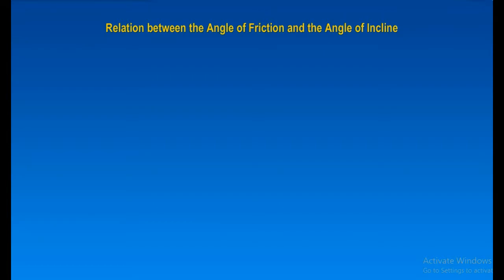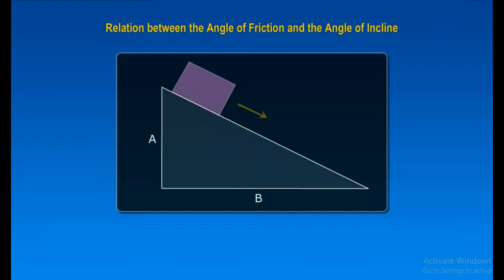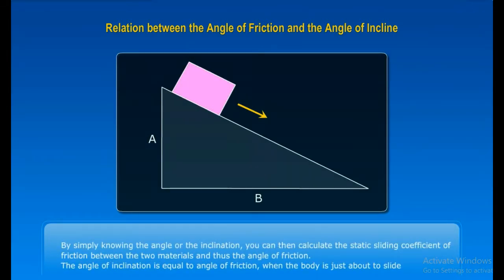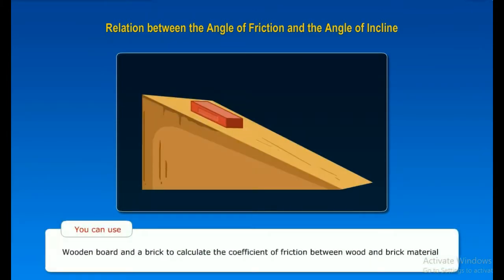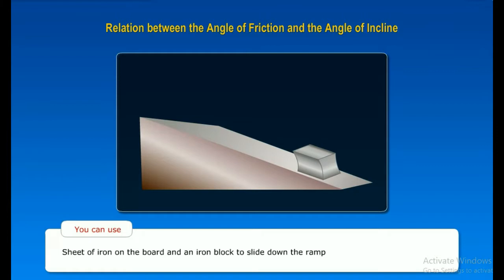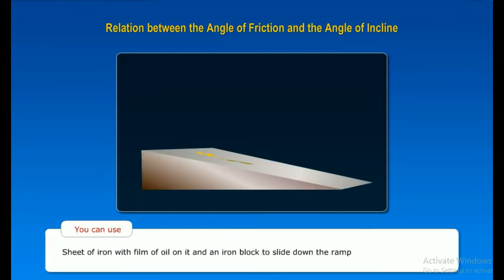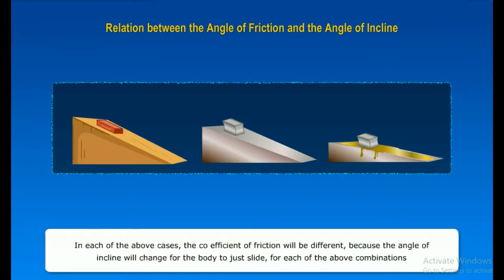Let's understand the relation between the angle of friction and the angle of incline. By simply knowing the angle or the inclination, you can then calculate the static sliding coefficient of friction between the two materials and thus the angle of friction. The angle of inclination is equal to the angle of friction when the body is just about to slide. You can use wooden board and a brick to calculate the coefficient of friction between wood and the brick material. Sheet of iron on the board and an iron block to slide down the ramp. Sheet of iron with a film of oil on it and an iron block to slide down the ramp. In each of the above cases, the coefficient of friction will be different because the angle of incline will change for the body to just slide for each of the above combinations.